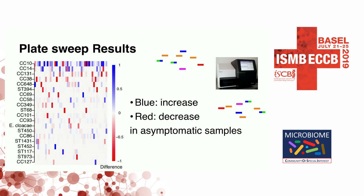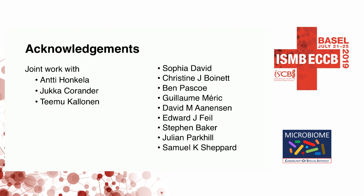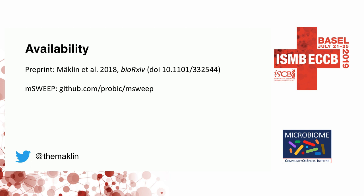Here are the results. Each column is a paired sample from one child, and each row is a lineage within E. coli. Blue means more abundant in the asymptomatic samples and red means less abundant. We see a massive shift in these lineages — quite a few lineages completely disappear in the new samples, and a few are present in both. We also looked at antimicrobial resistance content and found there was not much change between the two time points, which is surprising. There's a preprint available for this method, all code is available on GitHub, and we also provide reference databases for E. coli, Klebsiella pneumoniae, and Campylobacter jejuni.